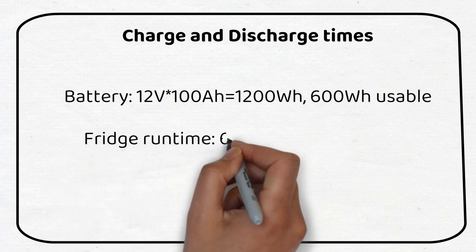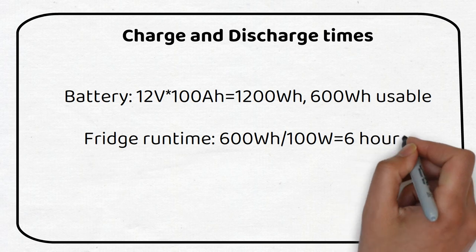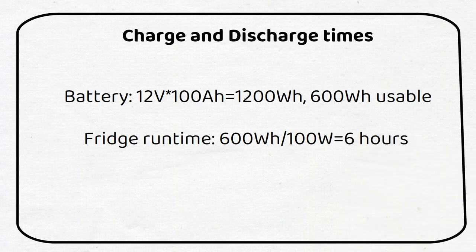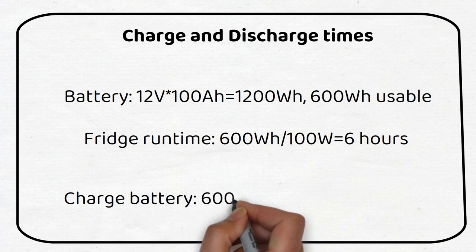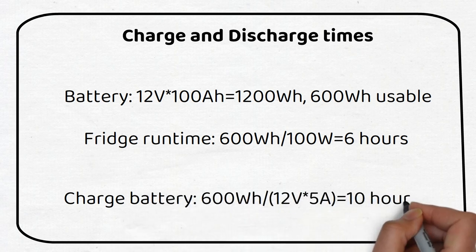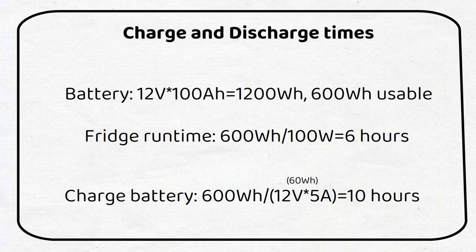If the fridge or load you're using is 100 watts then you can use the battery for 6 hours. After you have run the battery to 50% we need to recharge it. To recharge 600 watt hours divided by the power the charger delivers. This equates to a 10 hour charging time.